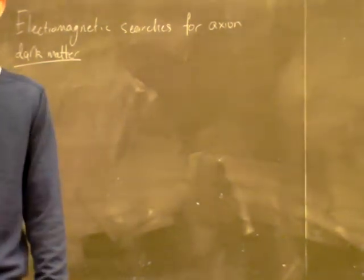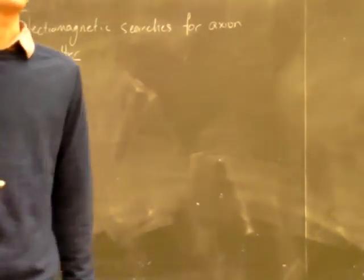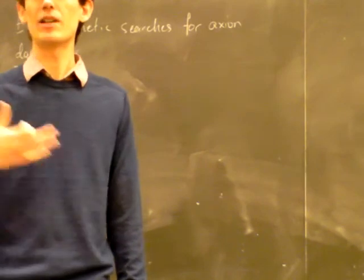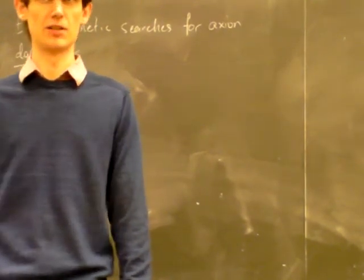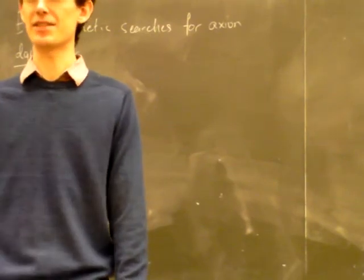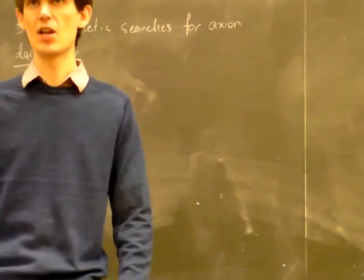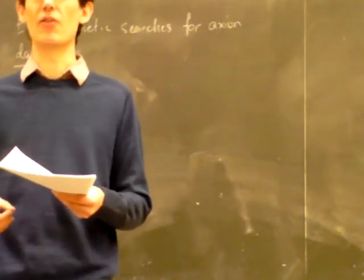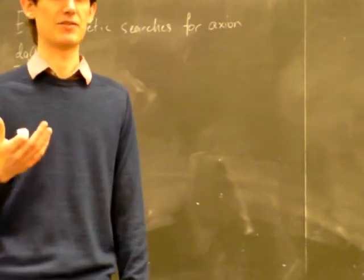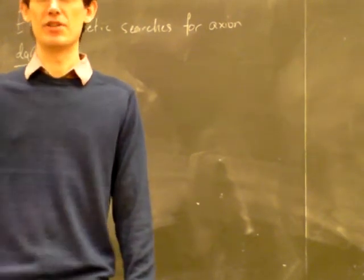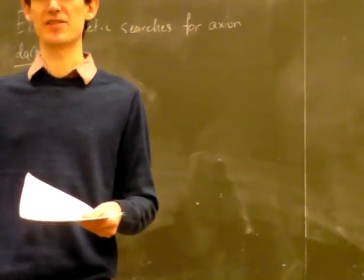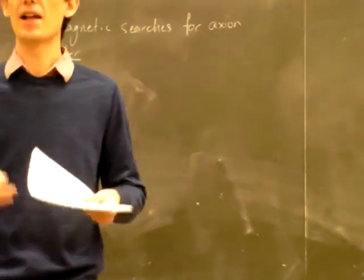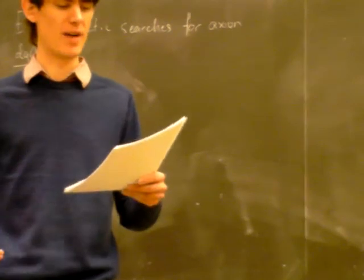Another candidate which is both theoretically attractive and practically interesting is the QCD axion. It's strongly motivated by solving an unrelated problem of the standard model — the strong CP problem — and in a happy coincidence, there are also very simple production mechanisms. Purely gravitational production during inflation and variations on that can naturally give you the correct dark matter abundance, motivating an experimental program including experiments such as ADMX.